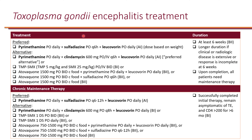For toxoplasma gondii encephalitis, the preferred treatment is the combination of pyrimethamine, sulfadiazine, and leucovorin for at least six weeks — longer if clinical or radiologic disease is extensive or response is incomplete at six weeks. After completing treatment, the same regimen is continued as chronic maintenance therapy or secondary prophylaxis until the patient is asymptomatic and CD4 is greater than 200 for at least six months.